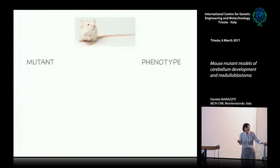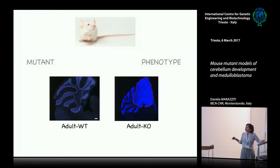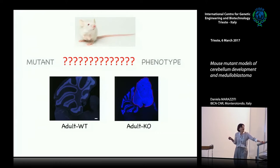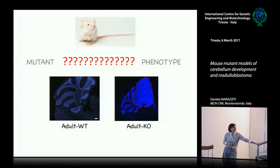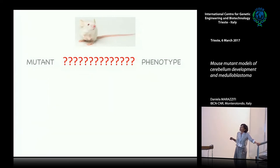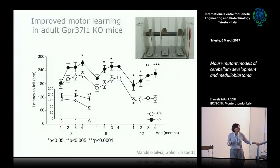When you have a mutant mouse, you look for phenotype, and sometimes it could be very easy — for instance, when you have a tumor like a medulloblastoma, just looking at the anatomy or histology makes it very clear what is going on. But some other cases it's not so simple, and this was the case of our knockout mice. The mice were born, they were healthy, they were inherited with the Mendelian frequency — we were told there was nothing strange. And so we started a detailed analysis of the mutant.